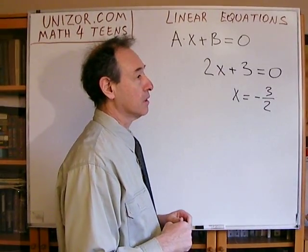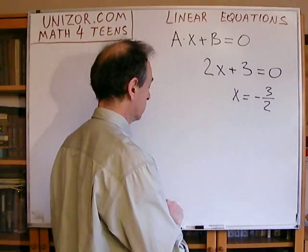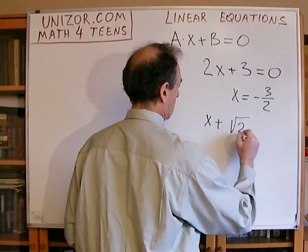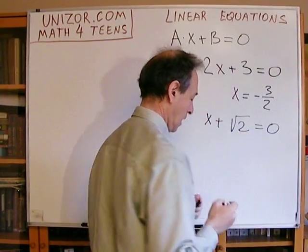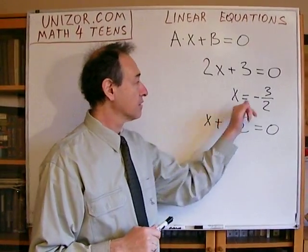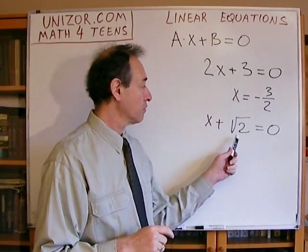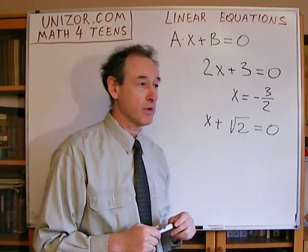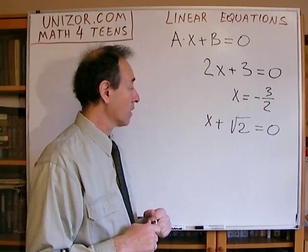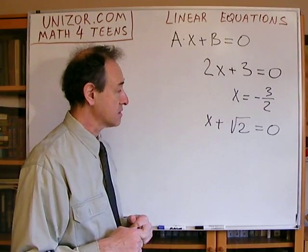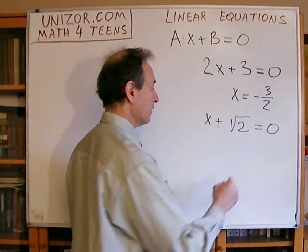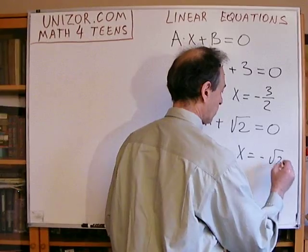Now, what if I ask about this particular equation and say that I'm looking for a solution in the domain of rational numbers? We all know that the square root of 2 is an irrational number, so there is no solution in the domain of rational numbers in this case. But in the domain of real numbers, the solution exists and x is equal to minus the square root of 2.